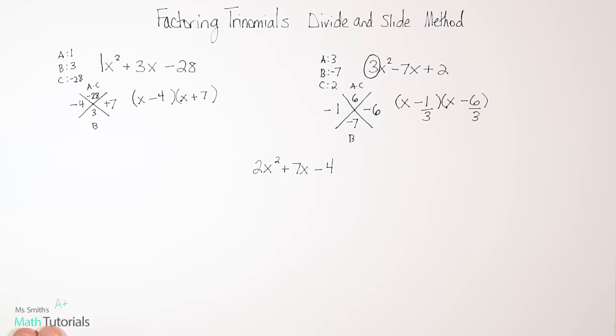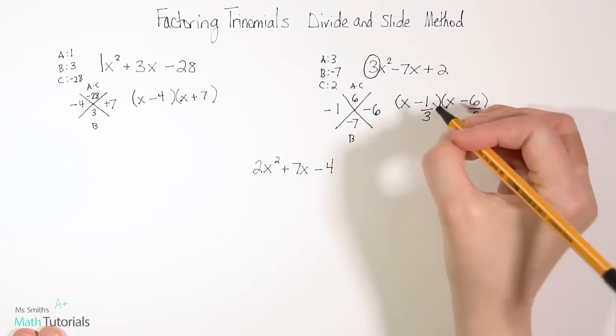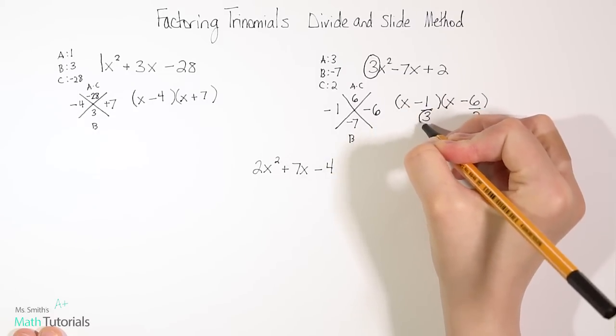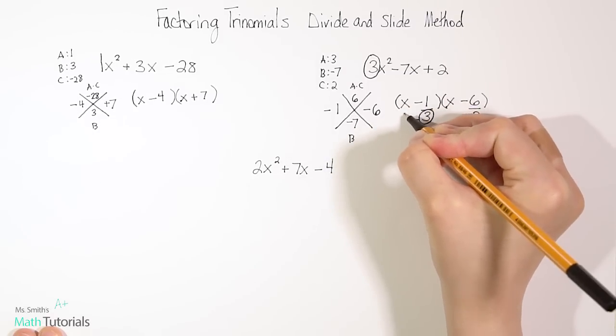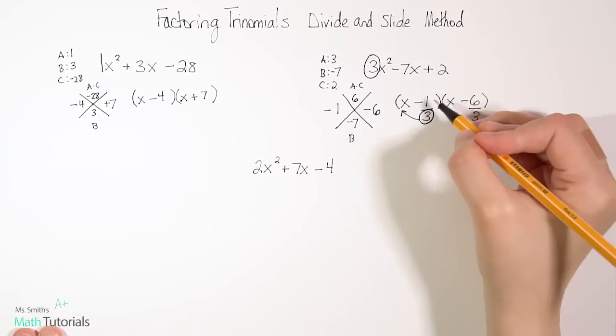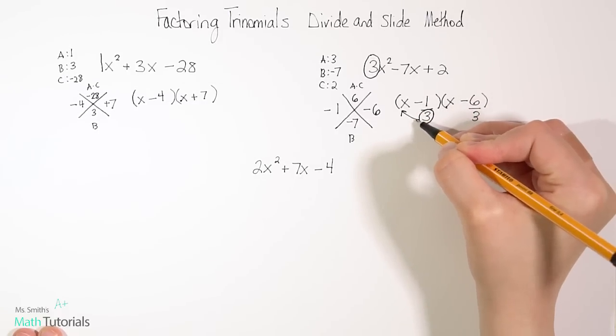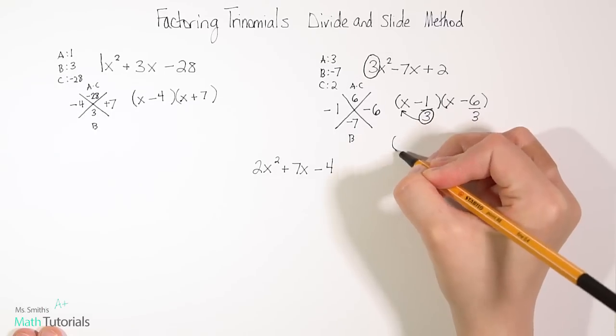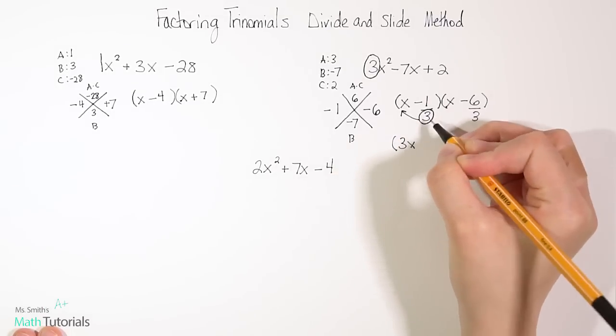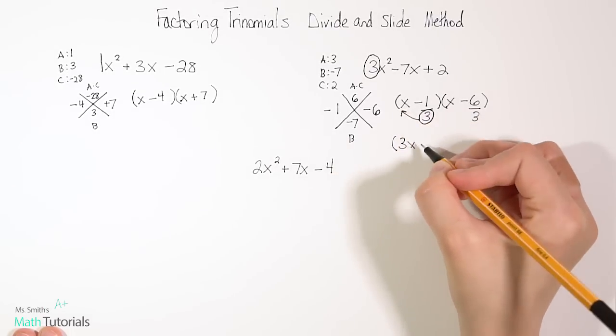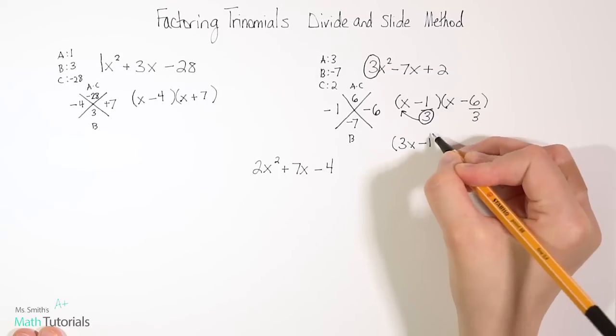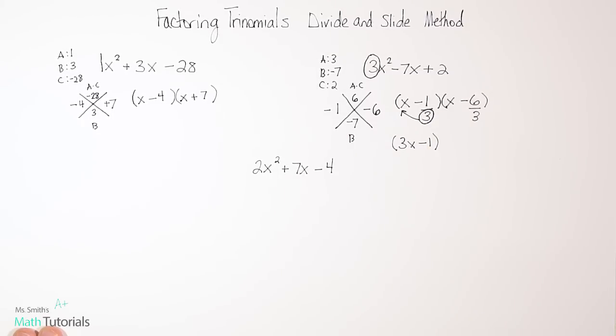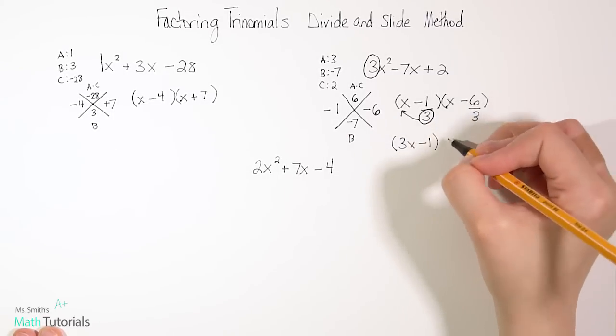So let me show you what I mean. This is an x minus 1 third. So 1 third, I can't divide and get a whole number. What we do is we take that 3 and we slide it. So because we can't divide, we need to slide. So we end up with a 3x. Notice I just put the 3 in front of the x, and then I leave the minus 1 as it was.